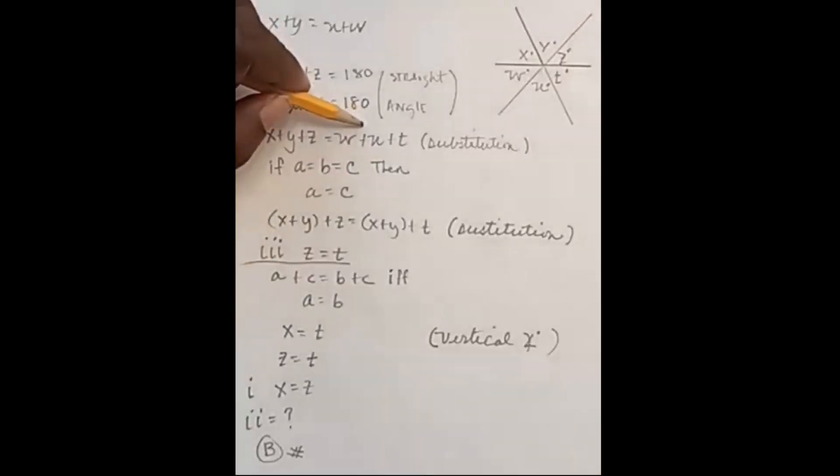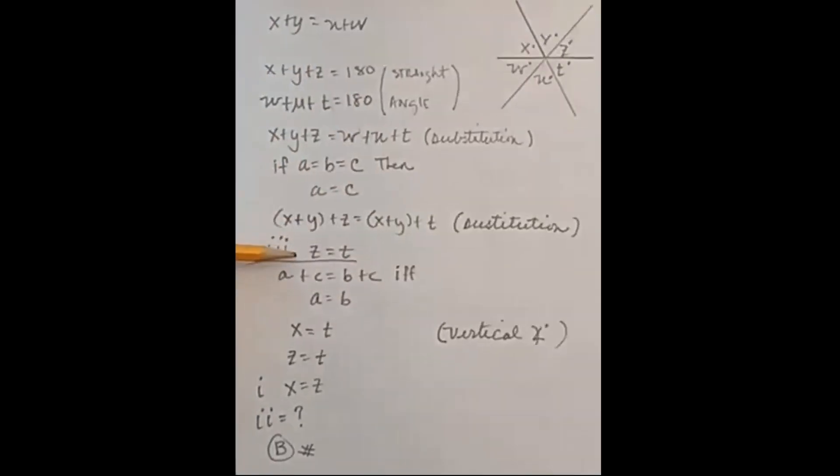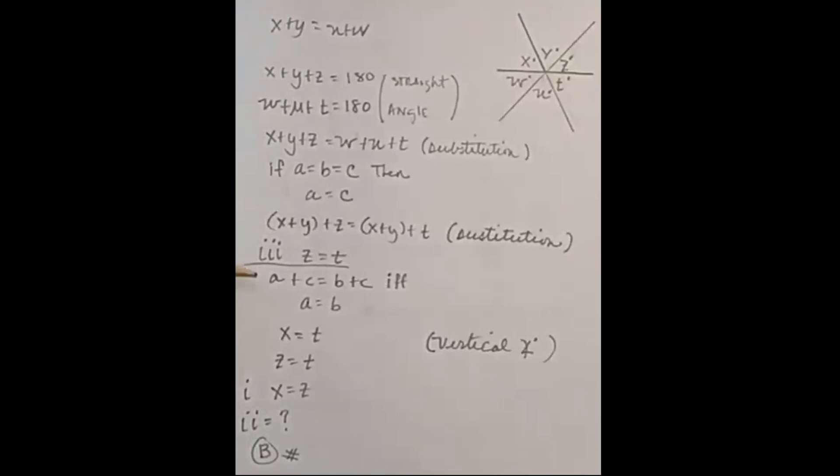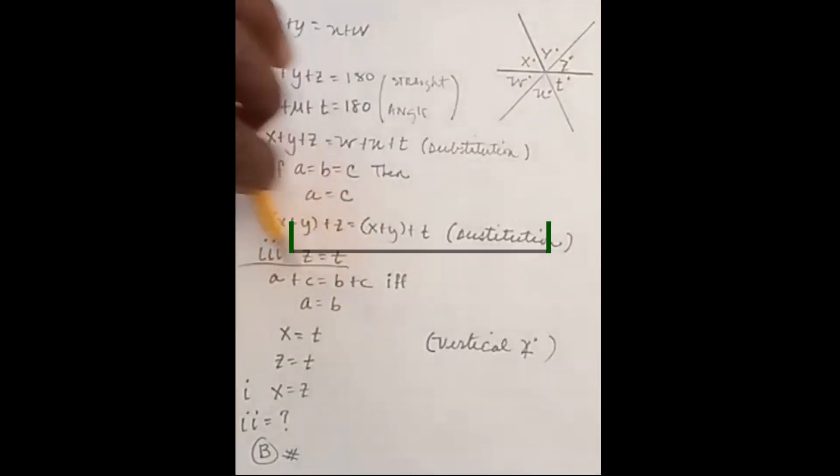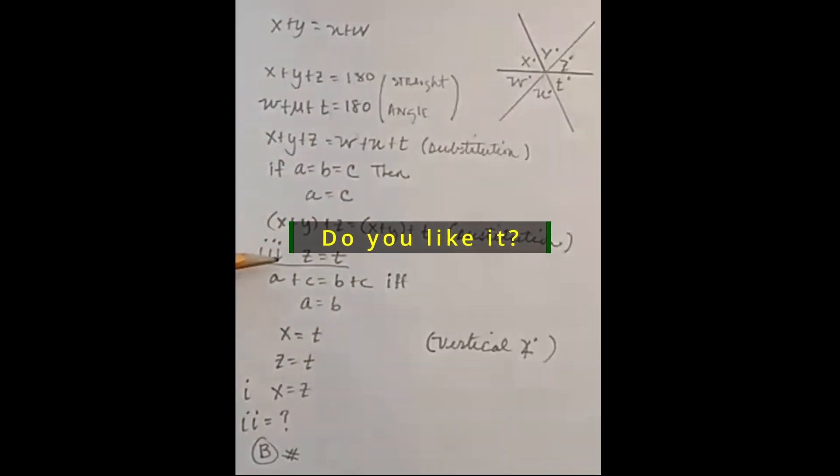Put this in parentheses and replace it with X plus Y. So for statement three, Z must equal T because if A plus C equals B plus C, that's true if and only if A equals B. We can see that must be the case. So we determined that Z equals T.